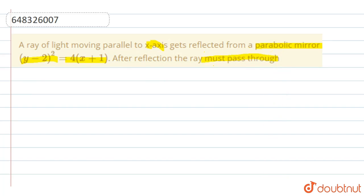Now we know the reflected ray always passes through the focus. That means here we have to find the focus, that is the point of focus. So let us find that.